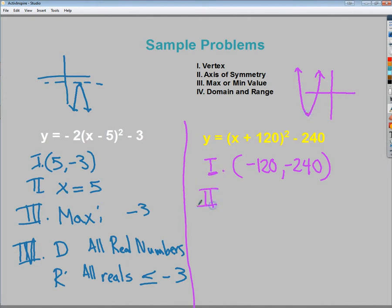My axis of symmetry, once again, is affected only by my horizontal shift. And since my horizontal shift is actually to the left, I need to say that x is equal to negative 120. For my maximum minimum values, this one's actually going up, so I have a minimum value, and that minimum value is negative 240.